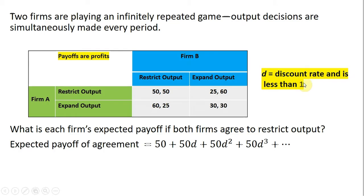Since $1 today is more valuable than $1 tomorrow, we need to discount these future profits. This is a sum of a geometric series, which will simplify nicely to the following. That would be the expected payoff of the agreement, if both firms restrict output.